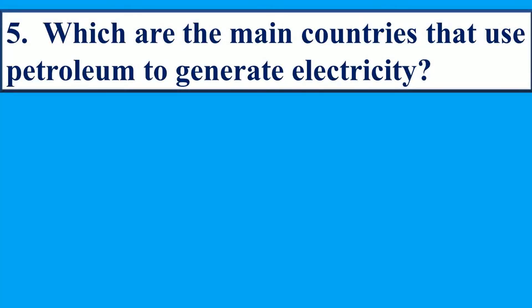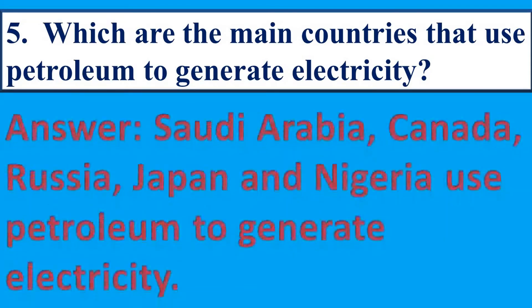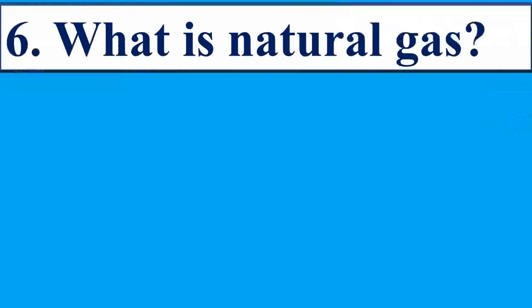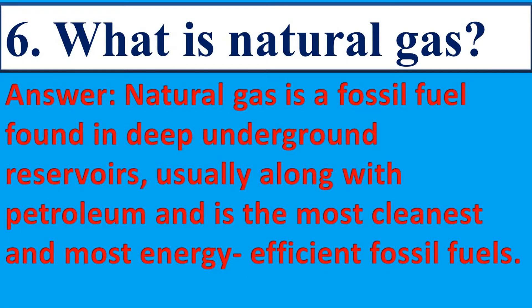Next question: which are the main countries that use petroleum to generate electricity? Answer: Saudi Arabia, Canada, Russia, Japan and Nigeria use petroleum to generate electricity. Next question: what is natural gas? Natural gas is a fossil fuel found in deep underground reservoirs and is the most energy efficient fossil fuel.